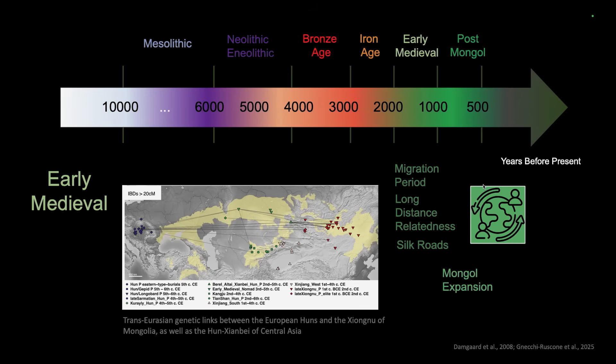Going further into the early medieval period, it's a time of the migration period, long-distance relatedness, and the Silk Roads reaching their height. We can see long-distance connections between populations occupying very different parts of the world — Western Eurasia and Eastern Eurasia — with a lot of long-distance genetic interactions becoming visible.